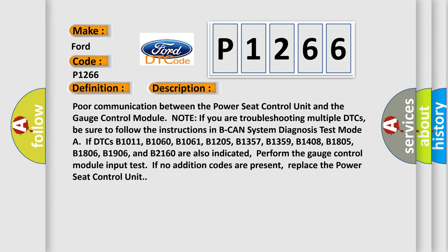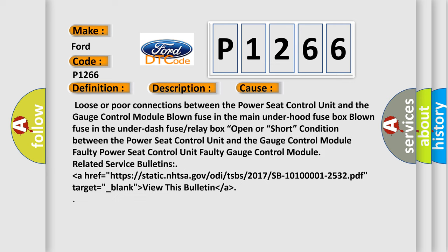This diagnostic error occurs most often in these cases: loose or poor connections between the power seat control unit and the gauge control module; blown fuse in the main under-hood fuse box; blown fuse in the under-dash fuse or relay box; open or short condition between the power seat control unit and the gauge control module; faulty power seat control unit; or faulty gauge control module.